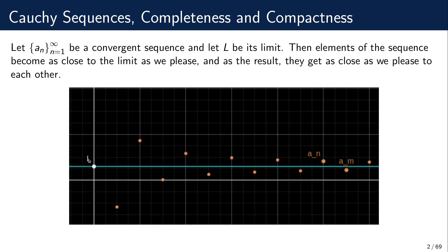Let us see pictorially what this means. If this is the limit L of the sequence, the horizontal axis represents the indices of the sequence, and the height represents the value. The values are getting close to the limit provided that we go far enough. If we want the distance to be smaller than some positive epsilon, then provided we go far enough, this will happen. So the elements are close to each other because they are all very close to the limit, and they get more densely packed around it.